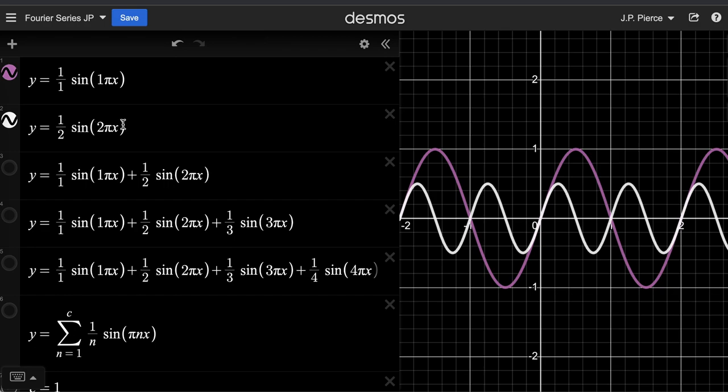And then since we've graphed sine 2 pi x instead of sine 1 pi x, it's got half the period. So you can see it's oscillating twice as fast. So while the purple curve took 2 units to oscillate fully, the white curve takes only 1 unit to oscillate fully.